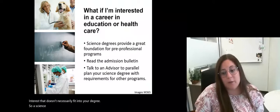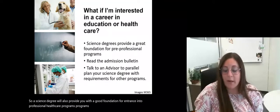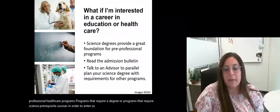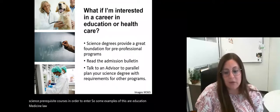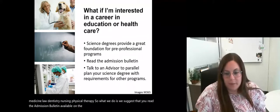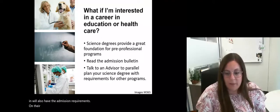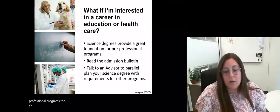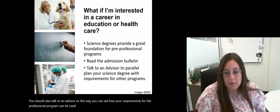A science degree will also provide you with a good foundation for entrance into professional healthcare programs, programs that require a degree or programs that require science prerequisite courses in order to enter. Some examples of this are education, medicine, law, dentistry, nursing, physical therapy. What we do is we suggest that you read the admission bulletin available on the U of M website and other schools that you may be interested in. You should also talk to an advisor so this way you can see how your requirements for the professional program can be used towards a science degree.